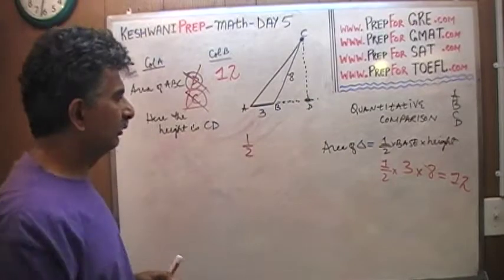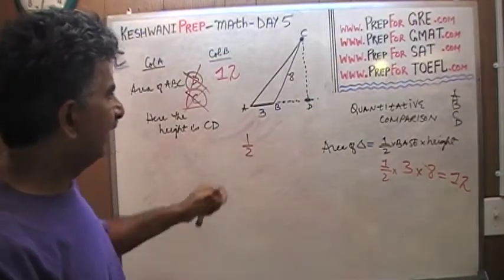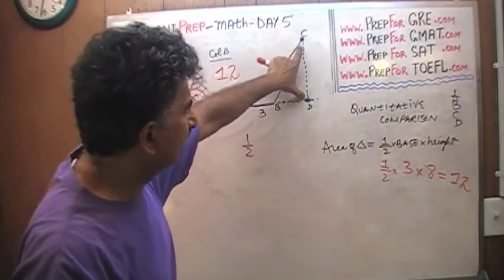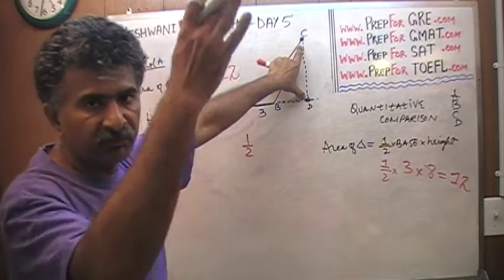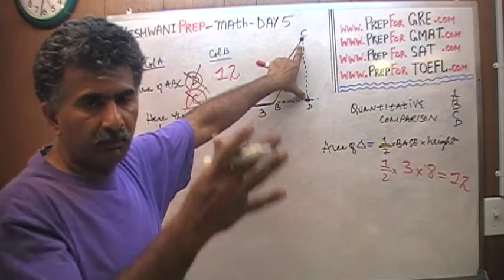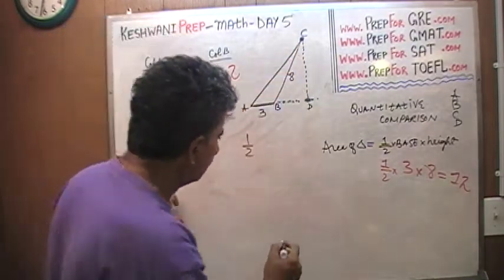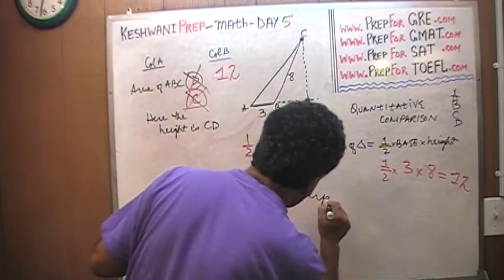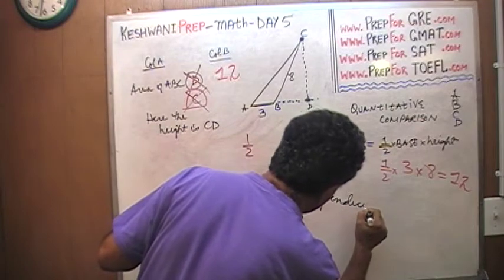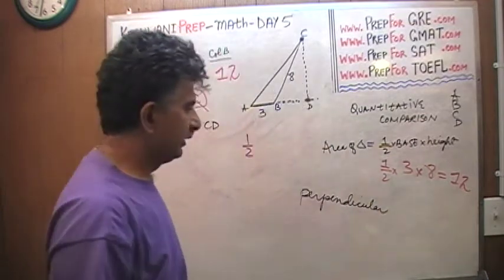And of course they are wrong. Of course they are wrong because, as I explained already, the height here is not 8. The height is from C to D, which is a much shorter distance, coming straight down vertically, coming straight down perpendicularly, that is, is much shorter.